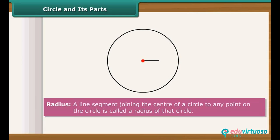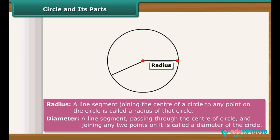A line segment joining the center of a circle to any point on the circle is called a radius of that circle. And a line segment passing through the center of circle and joining any two points on it is called a diameter of that circle.